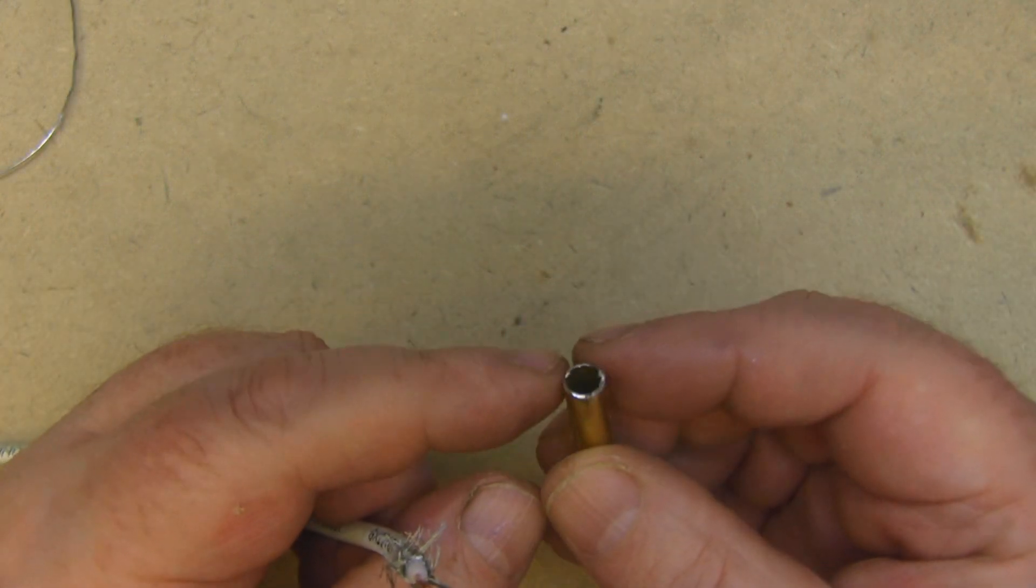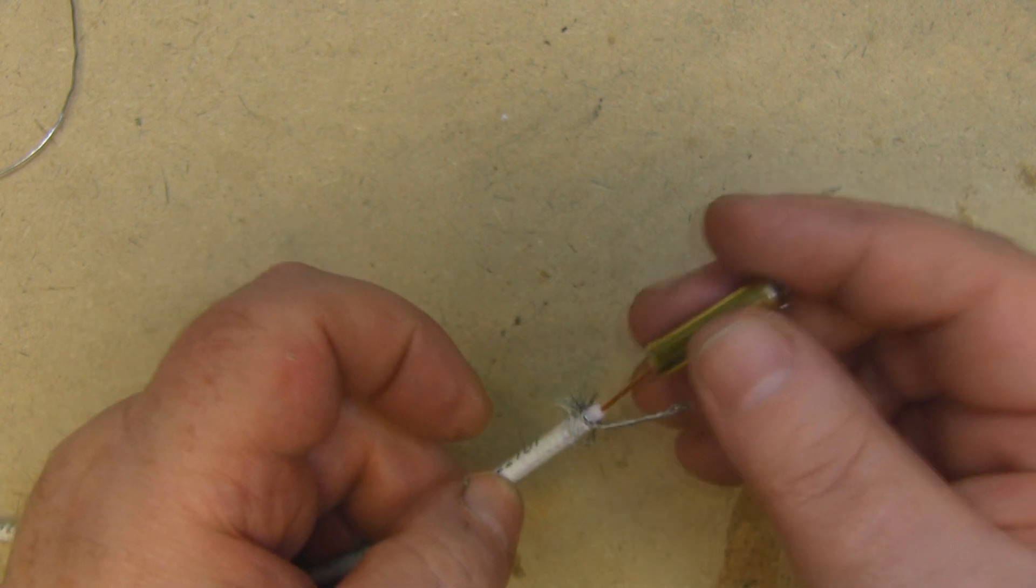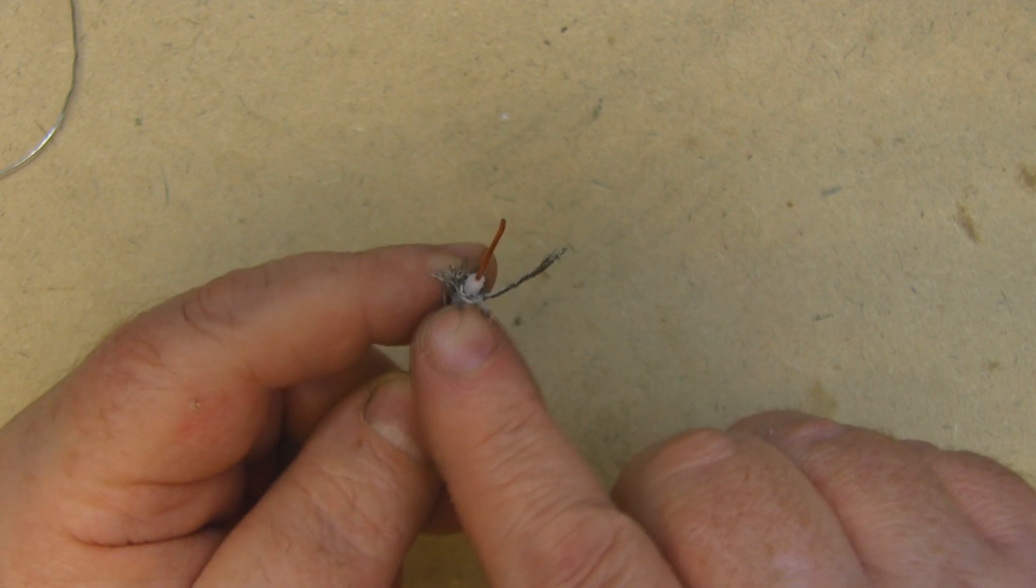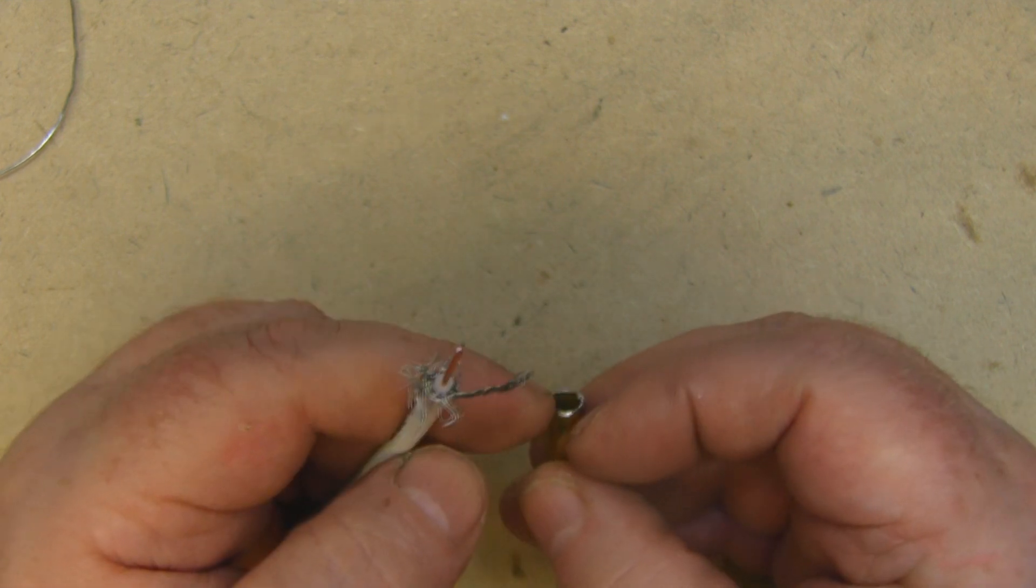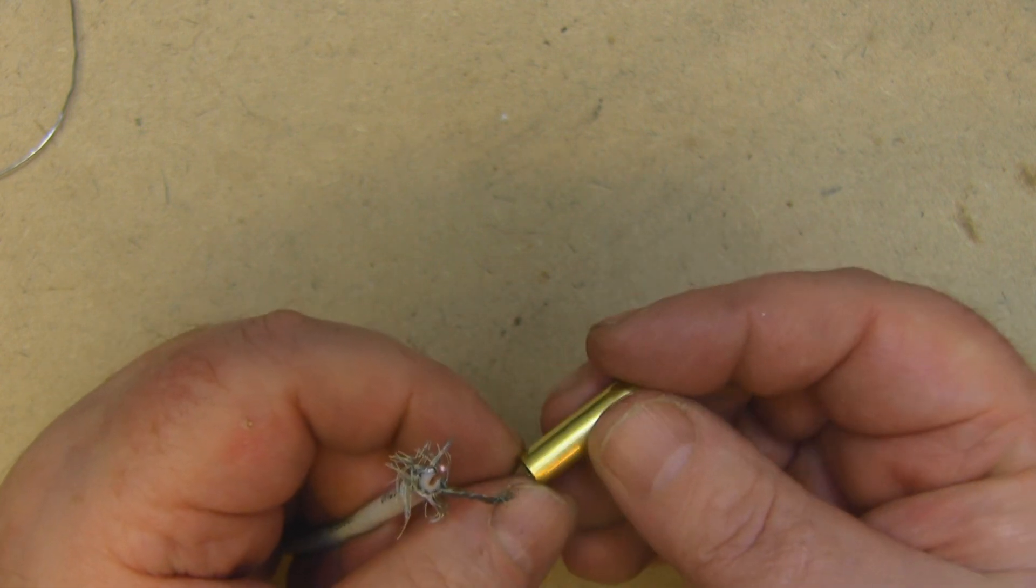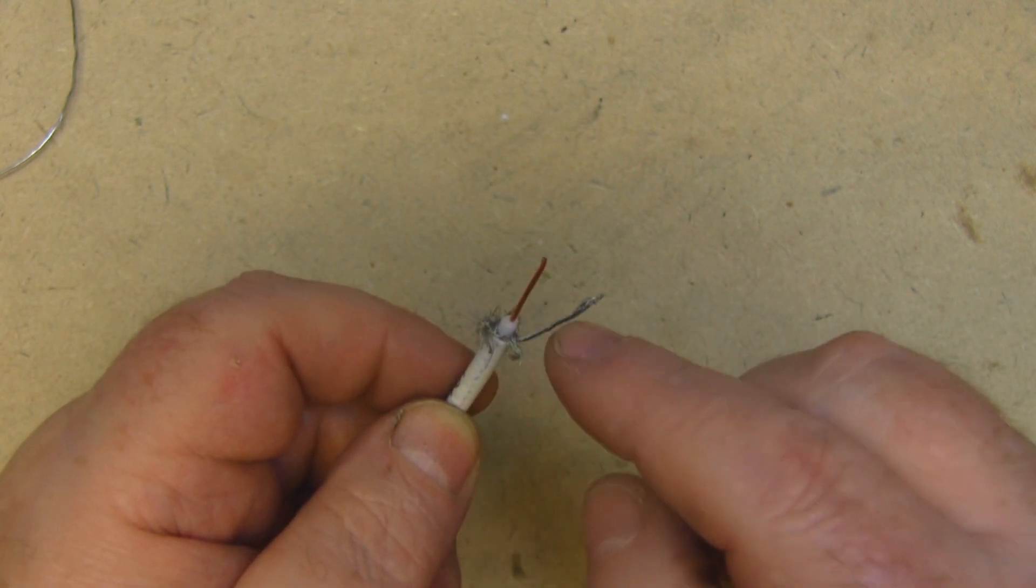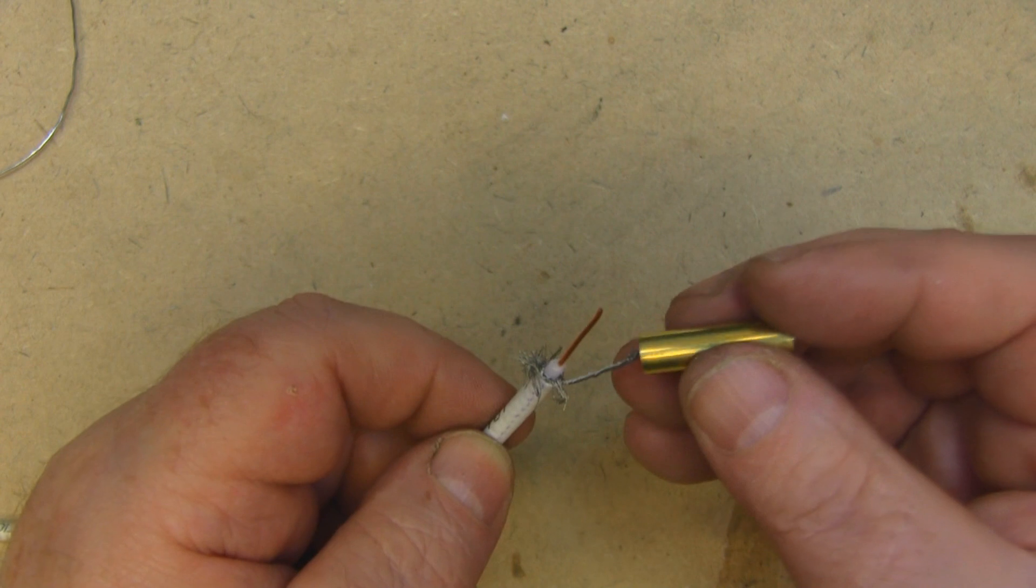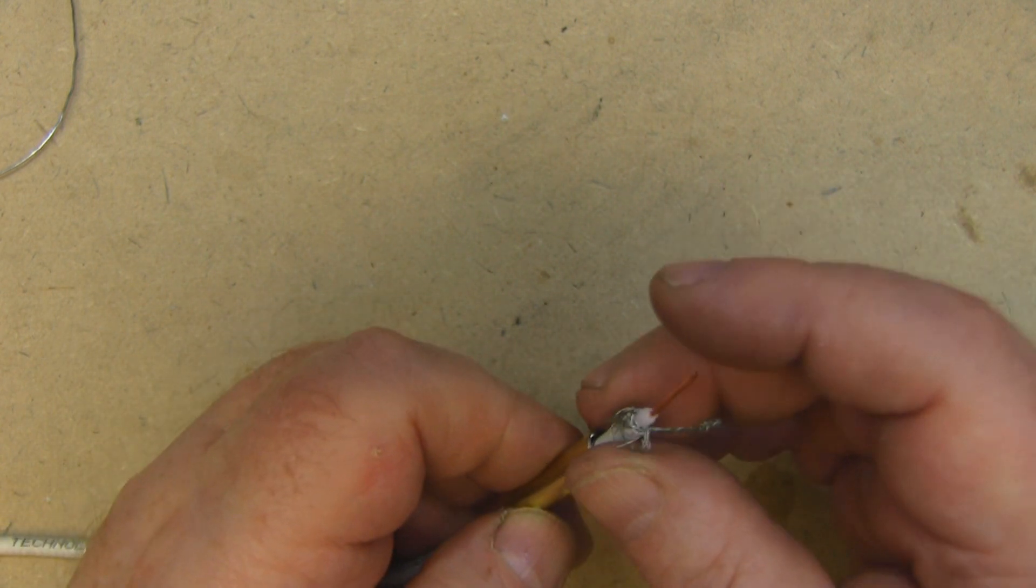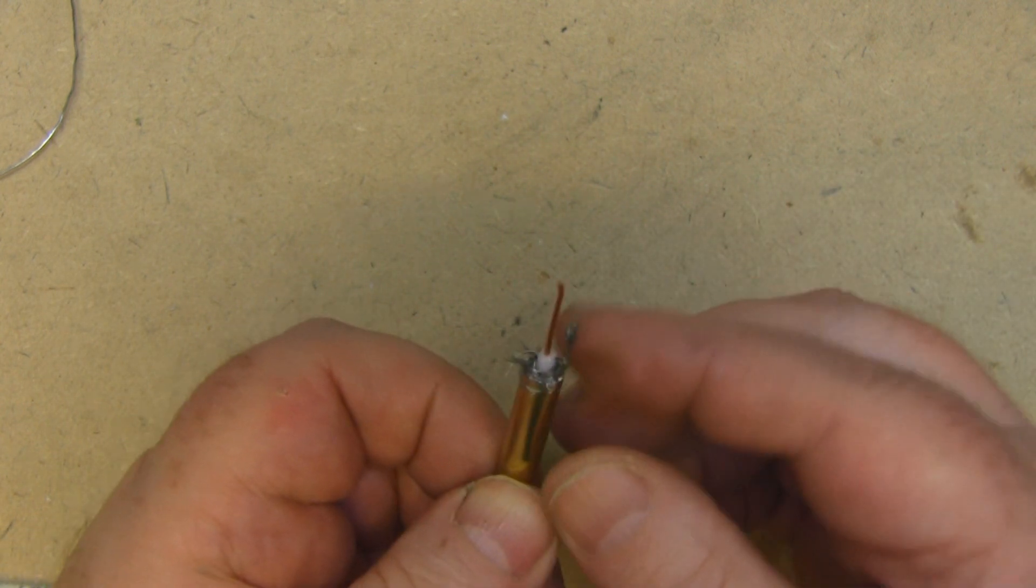Now I've got my balun here and I've already pre-tinned around the top edge of this because we're going to be slipping this on and then soldering it up onto this outer braid of the coax here, just at the top. We don't solder on to any other part of the balun - that remains free. I've got the coax prepared as you can see here. I haven't tinned anything up yet because we want to slip this over the top of here.